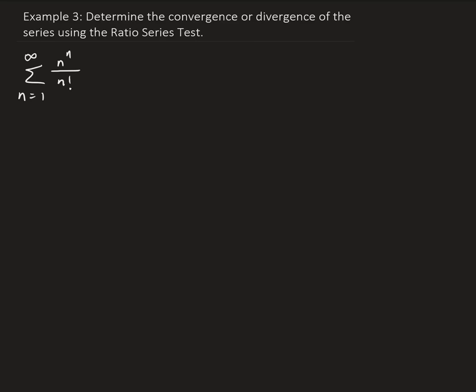In this example, we want to determine the convergence or divergence of the following series using the ratio test. We're going to calculate the limit of the ratio of the (n+1)th term over the nth term. If we get something less than one, the series will converge. If we get something strictly bigger than one, the series will diverge. If the limit equals one, the test is inconclusive.